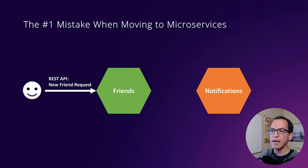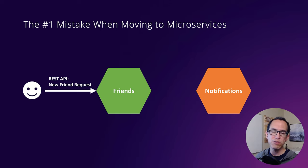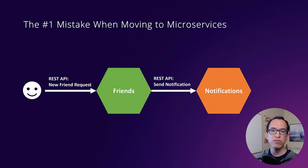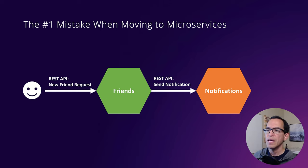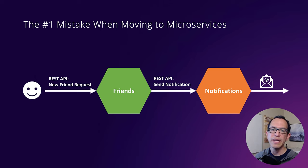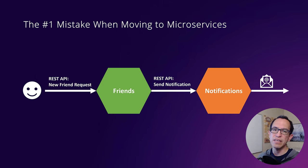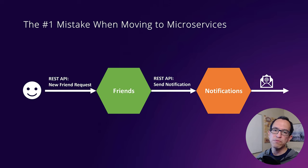The teams behind each of these microservices talked to each other and decided the best way to do this is to stand up just another REST API — in this case, in the notification microservice — via which the friends microservice can send a request into notifications. Then notifications will take that request and go ahead and send a notification, let's say via just an email. And that looks just fine, and this is what teams will usually do to start with.